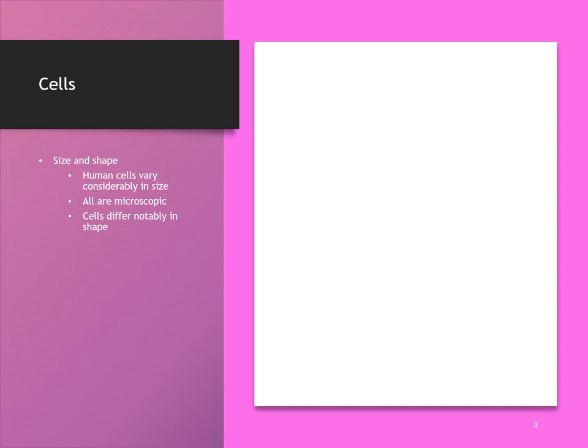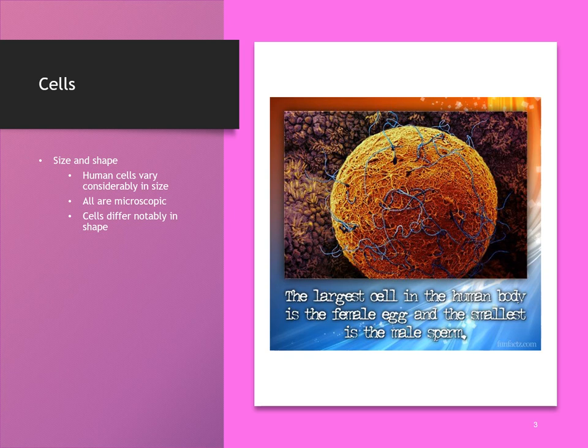Do you know what the largest cell in the human body is? What about the smallest? If you guessed that the female egg is the largest cell, you would be correct. Conversely, the smallest cell in the human body is the male sperm. The female egg is approximately 150 micrometers, compared with the sperm at 50 micrometers.